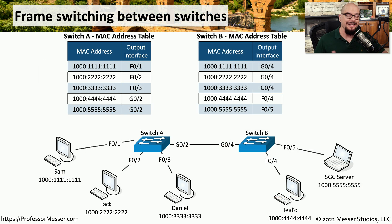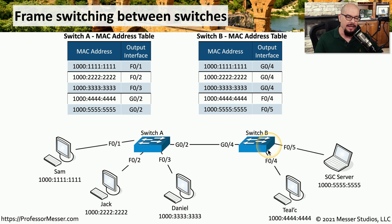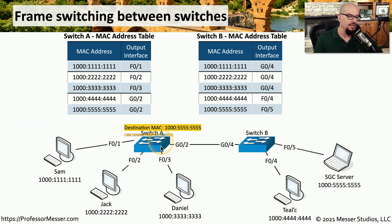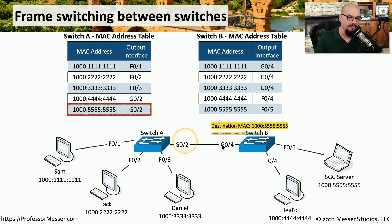If you have multiple switches, it's exactly the same process, except it occurs twice — once on the first switch and once on the second. Sam is communicating to the SGC server, but there is switch A on one side of the network and switch B on the other. Each switch has its own unique MAC address table. Sam sends traffic to MAC address 1,5555555. As that traffic hits switch A, it refers to its own MAC address table and determines that MAC address is on the gigabit 0/2 interface, and sends the traffic out that interface to the next switch.